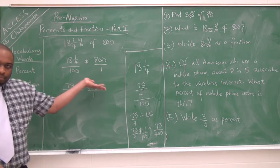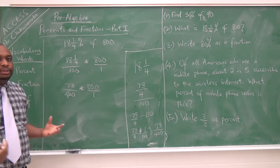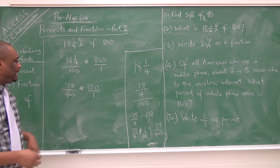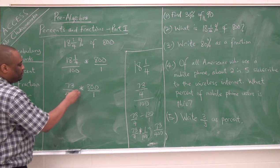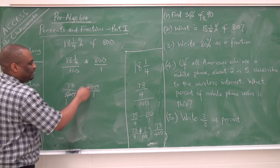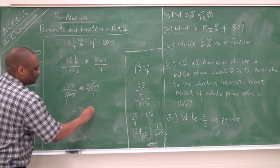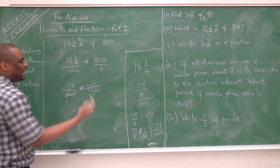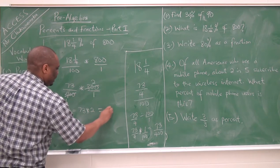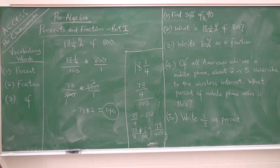We can multiply then simplify, or simplify then multiply — I choose to simplify first. 400 divides 400 to give 1, and 400 divides 800 to give 2. So this becomes 73 times 2 over 1 times 1, which gives me 146. And that is my answer: 146.